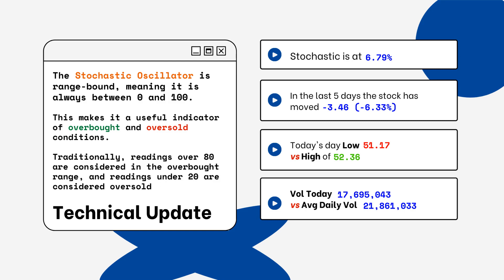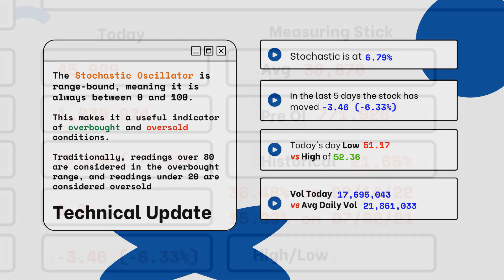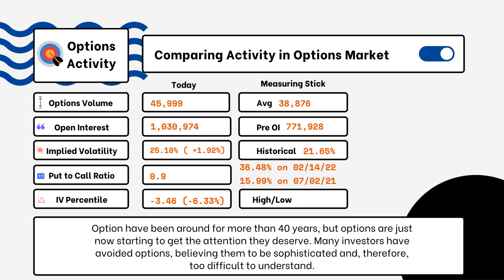We've also provided today's volume of shares traded and also the average daily volume. You want to see how much volume is being traded and if it is above or below the average daily volume level — this tells you how relevant the move is from the stock today. We've also provided details on today's option activity.